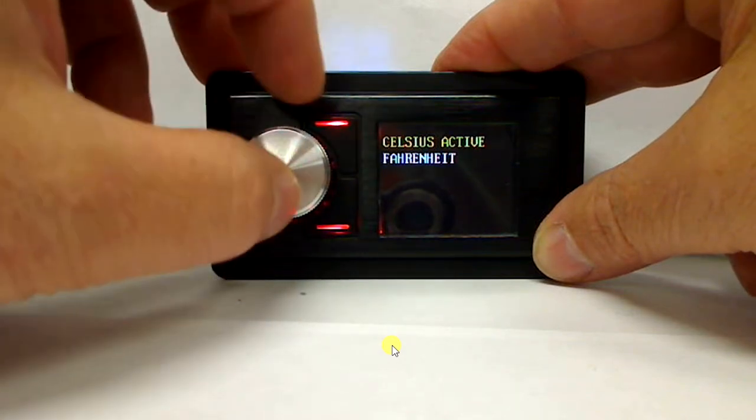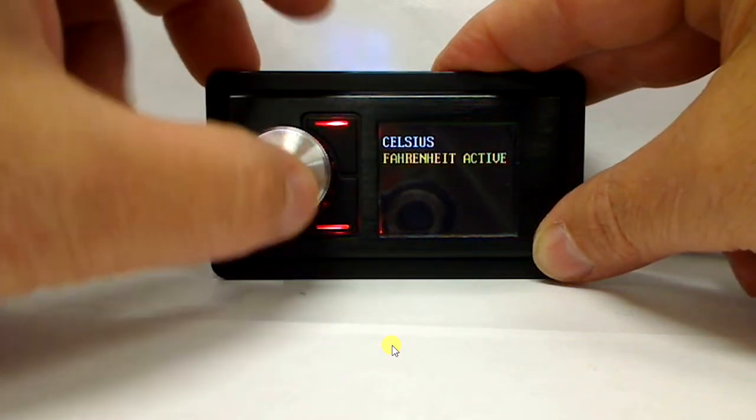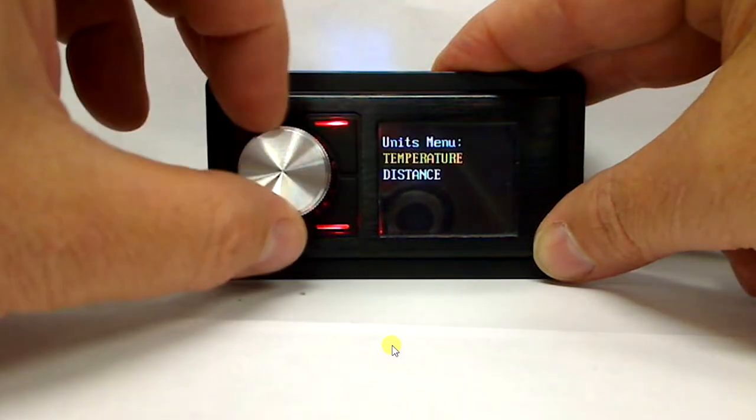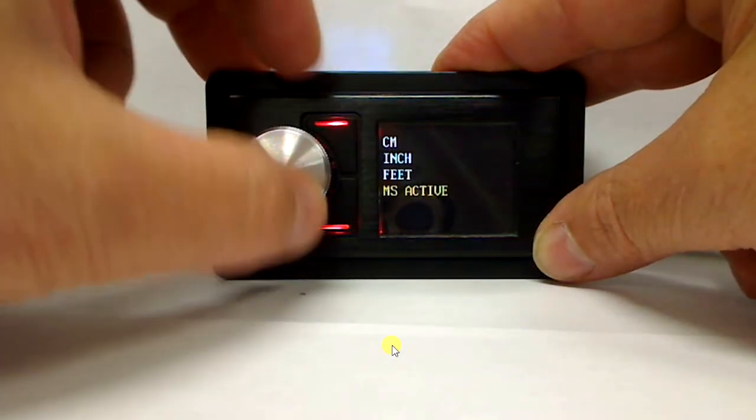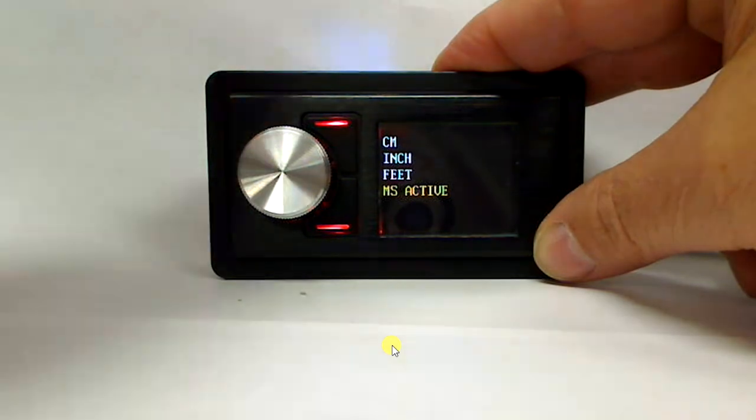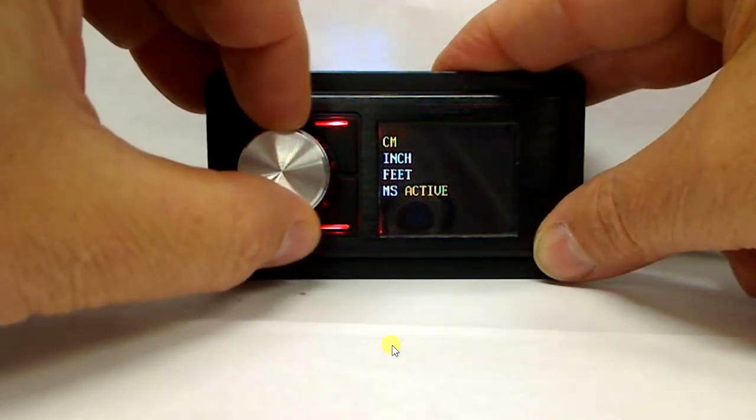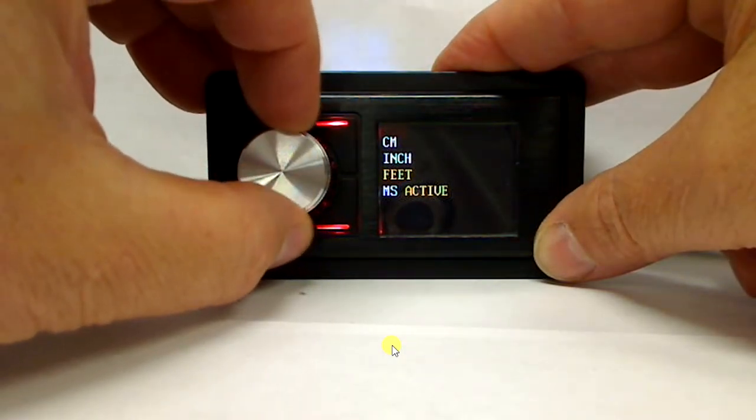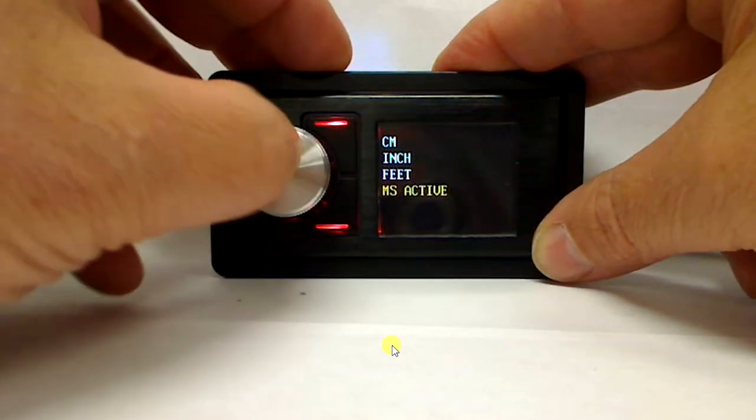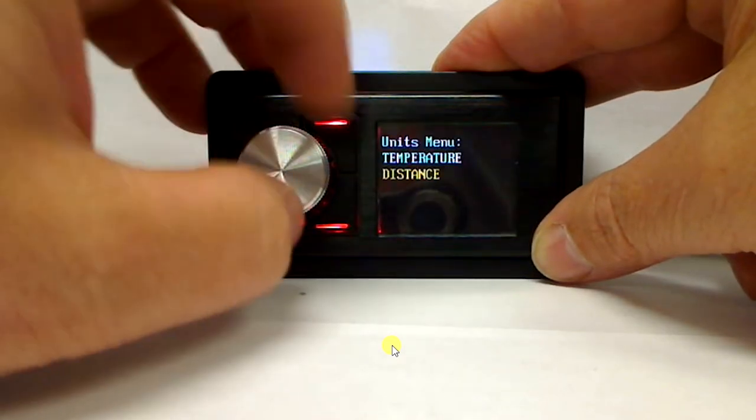We'll enter temperature and right now it says Fahrenheit active. You can come up there and click Celsius. I'm in the states so I'm going to keep it at Fahrenheit and then we're going to back up. Distance: you can select your delay measurements for centimeters, inch, feet, and milliseconds. I prefer milliseconds so we're going to hit enter and back out of it.